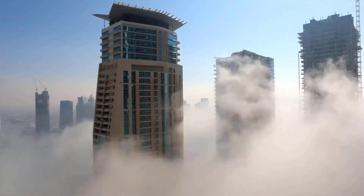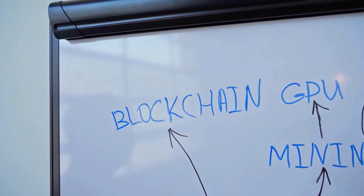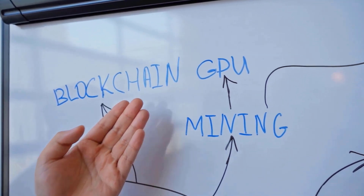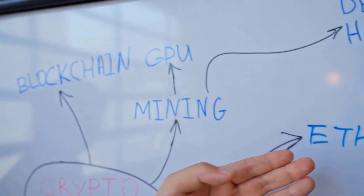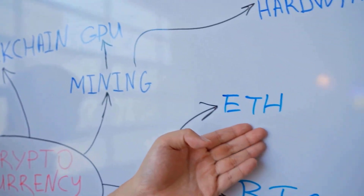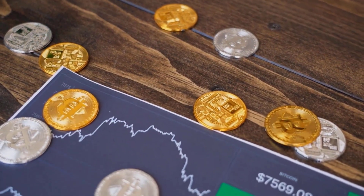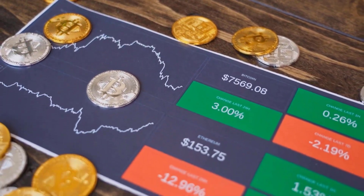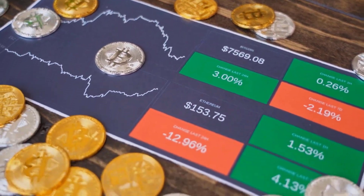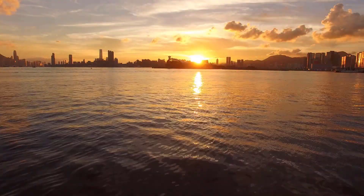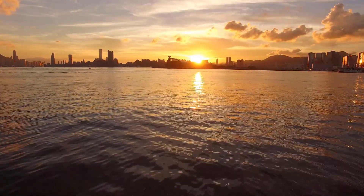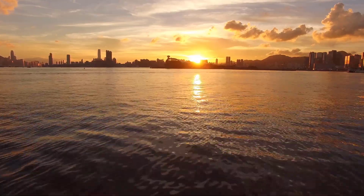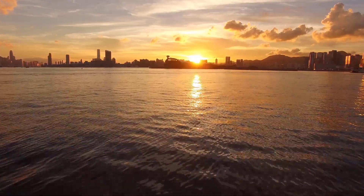At the outset cost at $21.21. Most extreme cost $55.46, least cost $21.21. The normal for the month $37.14. AVAX cost estimate toward the month's end $50.68, change for December 138.9%.